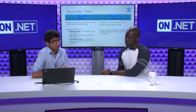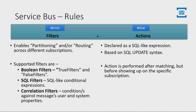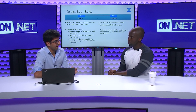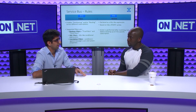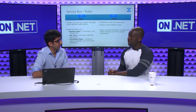The next feature is rules. We touched on this with topics and subscriptions, where a filter matches a condition on the message and routes it. We extend that concept with rules — a rule is basically a filter plus an action. The filter defines which messages you want to act on, and the action defines what you want to do on those messages. For example, the filter might say "send me messages that have the type 'order'," and then you can change some user properties and send it to a subscription.